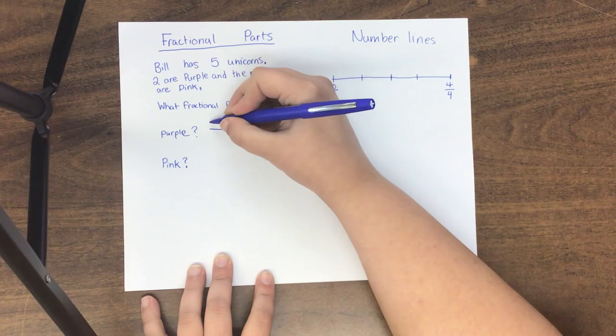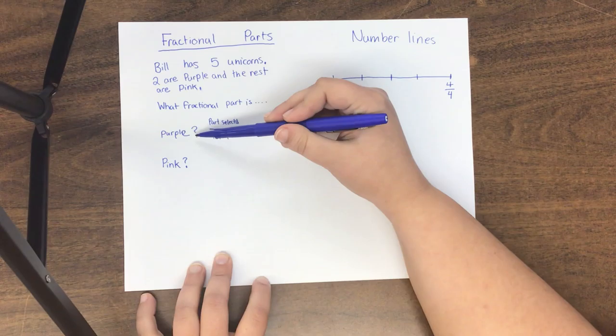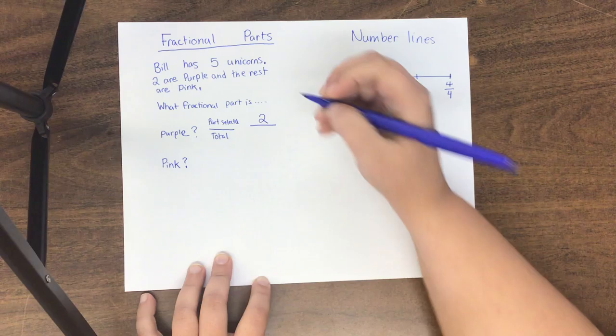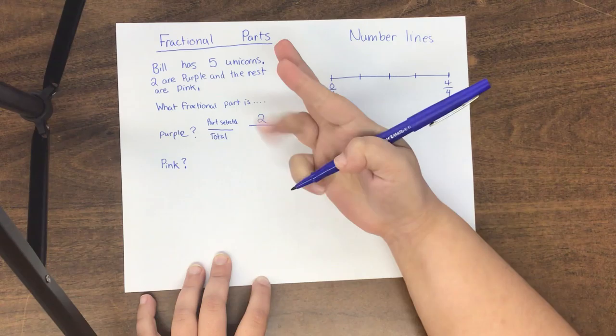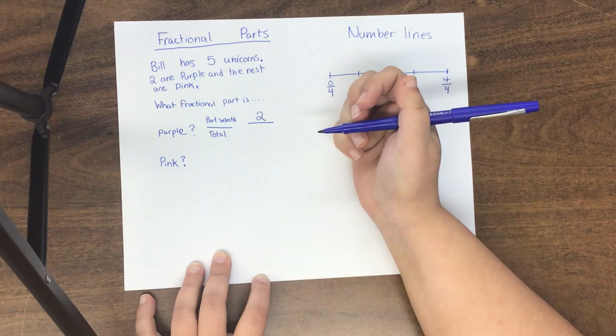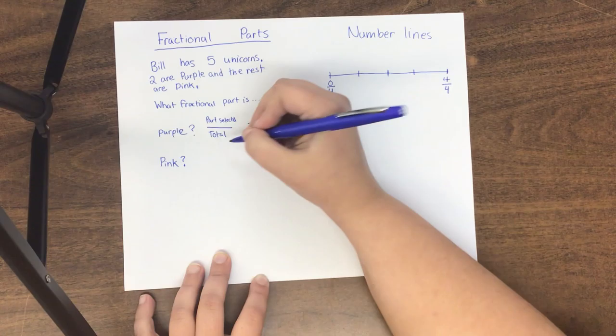Whenever we have a fraction, we have the part that is selected, or the numerator, over the total, or the denominator. The part selected is how many of the unicorns are purple in this case. How many unicorns are purple? Two are purple. So on the top, I'm going to put two. Two out of the group is purple, so two is our numerator. Our denominator is the total number of unicorns. Is that three unicorns or is that five unicorns? Let's take a minute to think about that. The answer is there are five unicorns in total, so our denominator is going to be five. There's my fraction.